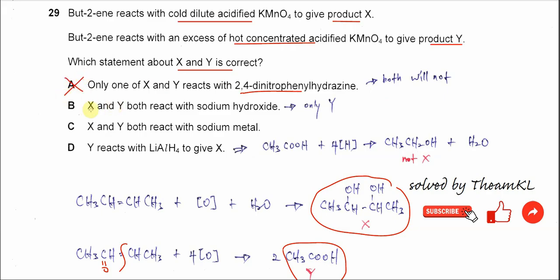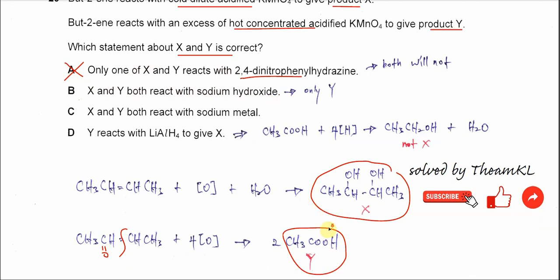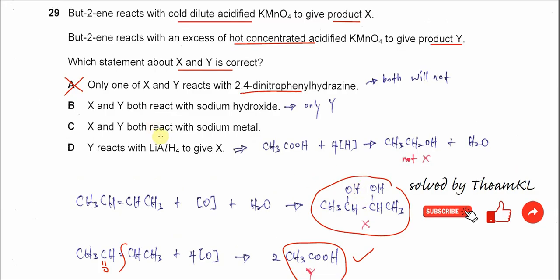B, X and Y both react with sodium hydroxide. Y is this carboxylic acid. Yes, it will react with sodium hydroxide. But this diol will not react with sodium hydroxide. So therefore, B is wrong. Only Y here.